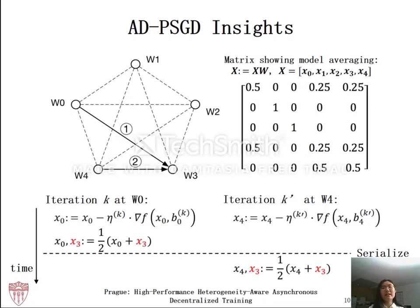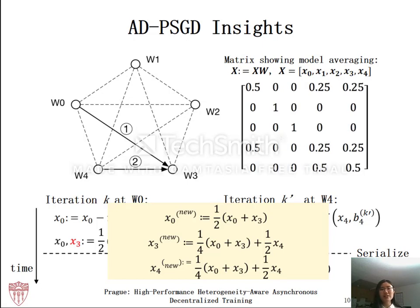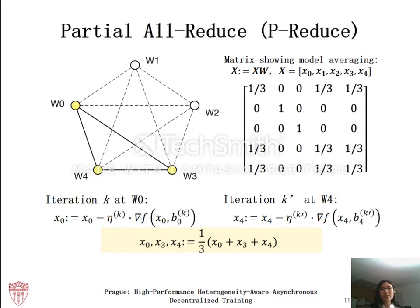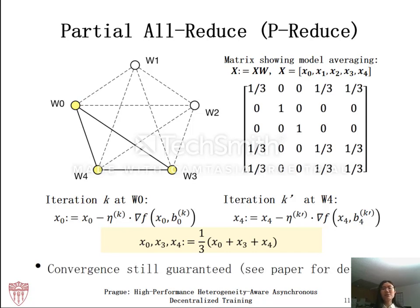Here comes the key idea. Instead of performing two synchronizations one after the other, why don't we perform one joint synchronization of the three workers? This can significantly shorten the execution time. Since the two synchronizations could have happened in any order, a better approach is to simply perform one model averaging over the three workers. Therefore, we have gone from synchronization between two random pairs of workers to synchronization among a random group of workers. We term this new merged operation partial allreduce, since it is essentially an allreduce operation among a subset of workers. Convergence is still guaranteed — please refer to our paper for more details.